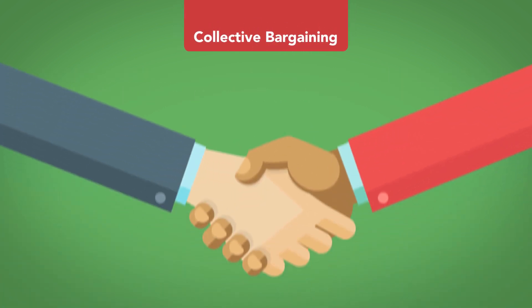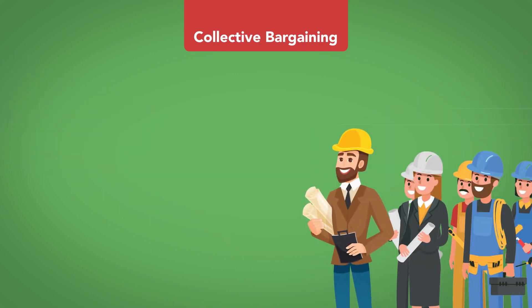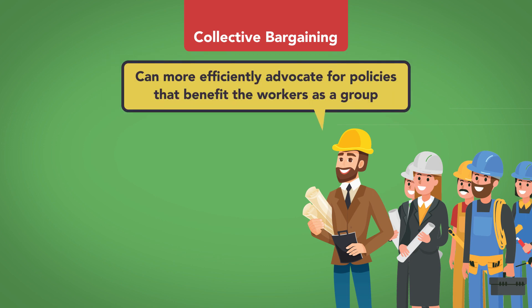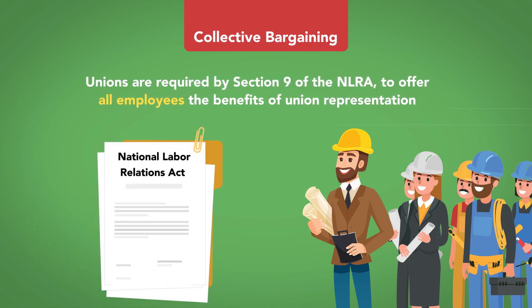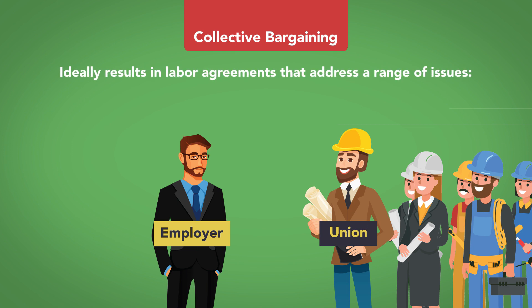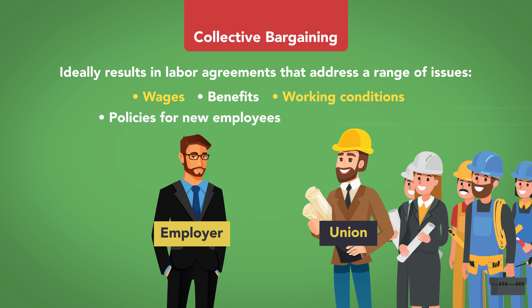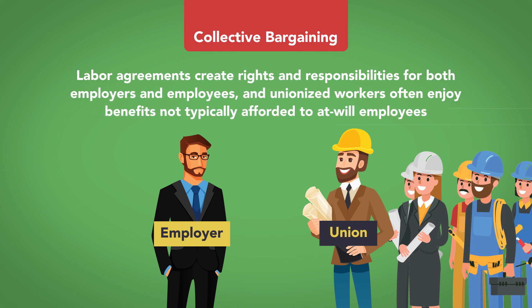Collective Bargaining. Collective bargaining is an important tool in the negotiation of labor agreements. Unions represent the collective interests of the employees and therefore can more efficiently advocate for policies that benefit the workers as a group. Unions are required by Section 9 of the NLRA to offer all employees the benefits of union representation. The collective bargaining process of negotiation between the employer and the union ideally results in labor agreements that address a range of issues, from wages, benefits, and working conditions, to policies for new employees, raises, and overtime. Labor agreements create rights and responsibilities for both employers and employees, and unionized workers often enjoy benefits not typically afforded to at-will employees.